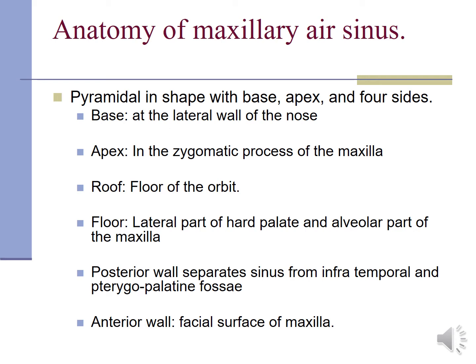Talking about the anatomy of the maxillary sinus, it is pyramidal in shape with a base, apex, and four sides. The base is formed by the lateral wall of the nose. The apex is formed by the zygomatic process of the maxilla. The roof is formed by the floor of the orbit. The floor is formed by the lateral part of the hard palate and the alveolar part of the maxilla. The posterior wall separates the sinus from the infratemporal and pterygoid palatine fossa. The anterior wall is formed by the facial surface of the maxilla.